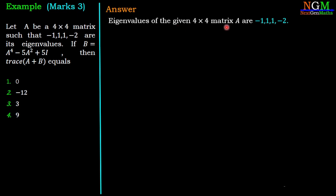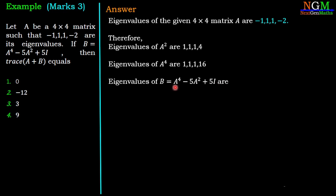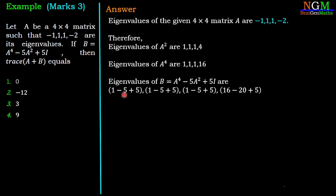Now we will use all these results one by one. The eigenvalues of the 4×4 matrix A are -1, 1, 1, -2. Therefore, the eigenvalues of A² are the squares: 1, 1, 1, and 4. The eigenvalues of A⁴ are the fourth powers: 1, 1, 1, and 16. For B = A⁴ - 5A² + 5I, the first eigenvalue is: 1 - 5(1) + 5(1) = 1.